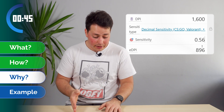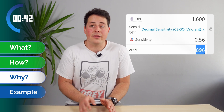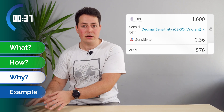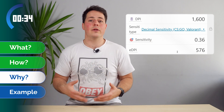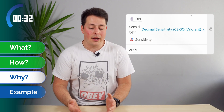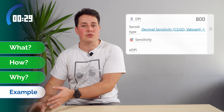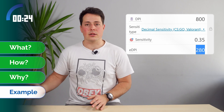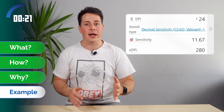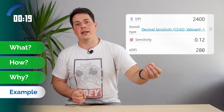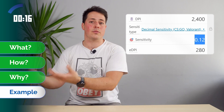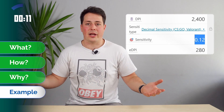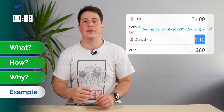You might wonder why you would want this number and why it's important. As long as this number is the same, it doesn't matter which mouse you're using or which computer or monitor — the game will feel the same. For example, if I play at home with 800 DPI and 0.35 sensitivity, when I go to my friend's house where he plays at 2400 DPI, I can change the in-game sensitivity without touching the mouse, and the game will feel exactly the same — as good or as bad as at home.